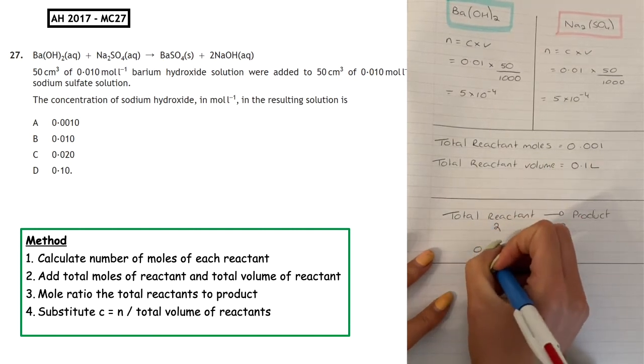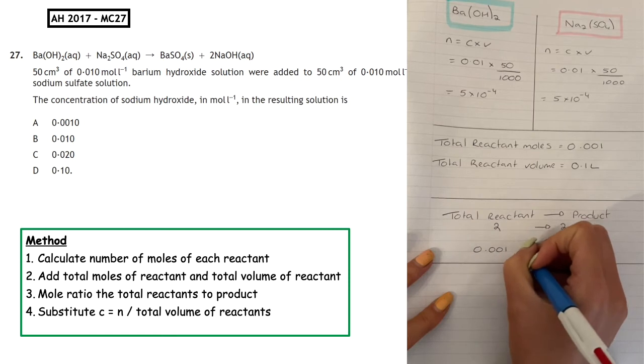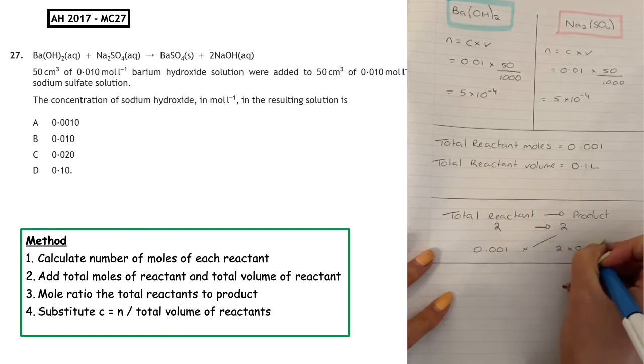We have not got a total of 2 moles—we calculated that we've got a total of 0.001 moles. We would cross multiply: 2 times 0.001 divided by 2 is going to give us 0.001 moles of product produced.